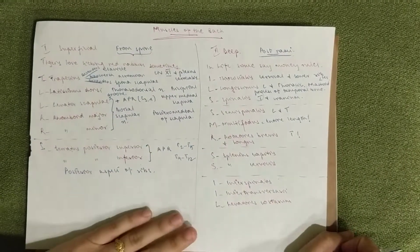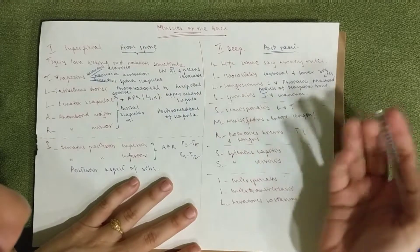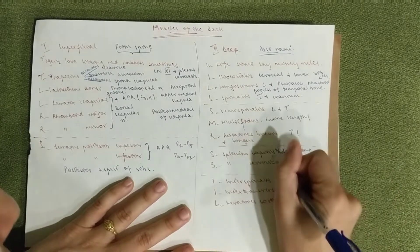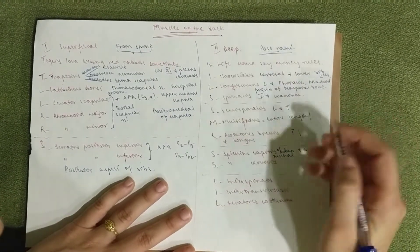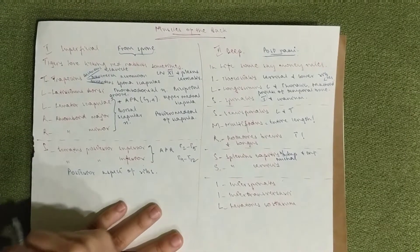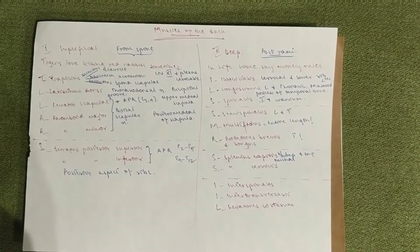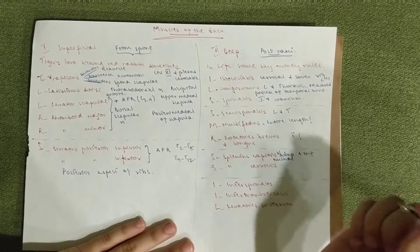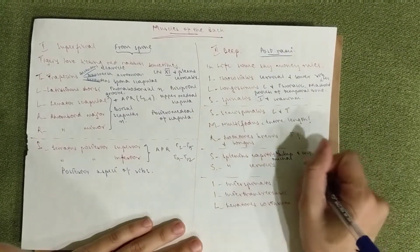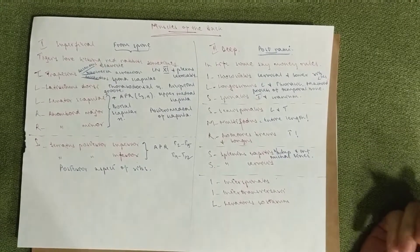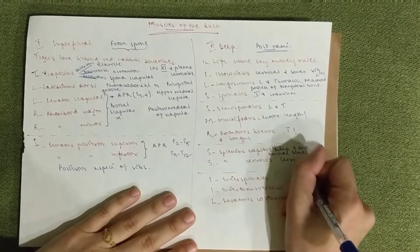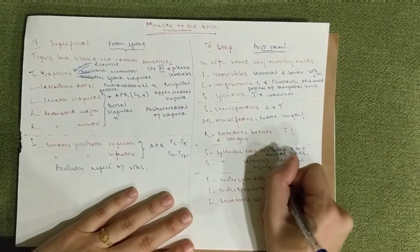The splenius capitis starts between the superior and inferior nuchal lines, which is on the base of the skull. The cervicis goes from the cervical vertebra C1 to C3, the posterior tubercles.